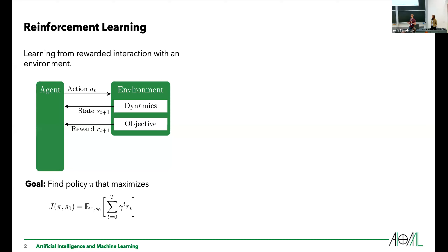The agent's goal is to find a policy such that its long-term sum of rewards is maximized. So not just pick an action that has high reward right now, but a sequence of actions that actually has high reward in total. And this works fine if we have this reward function.